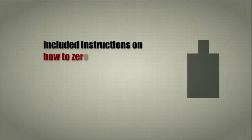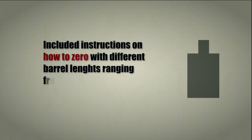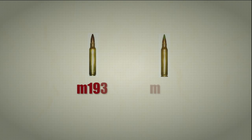We have also included instructions explaining how to zero using different barrel lengths ranging from 14 and a half to 20 inches, using both M193 and M855 including some 223 loads.